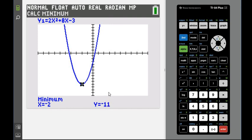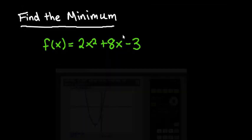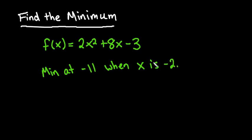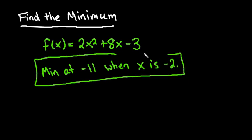Depending on how your textbook asks for it, most likely they're looking for the minimum value, which is negative 11. Negative 11 is the lowest point our graph goes to. So we would say that our minimum is negative 11 when x is negative 2 — and that would be our answer.